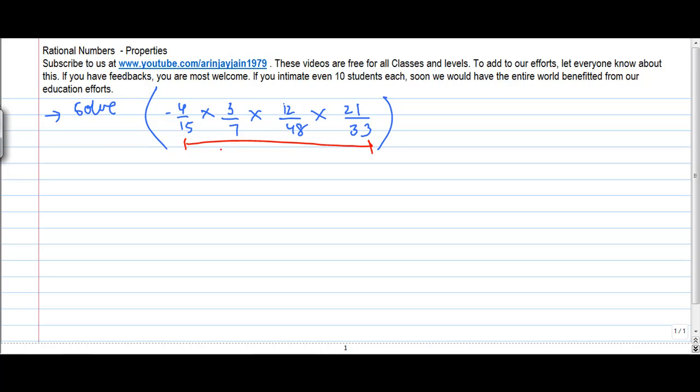As usual, I can do the multiplication one by one. First multiply this by this, then take the product and multiply that by this, then by this.